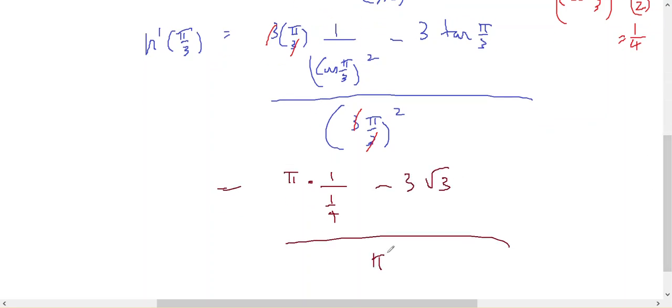all on pi squared, which is 4 pi minus 3 root 3 on pi squared. And that's the final answer.